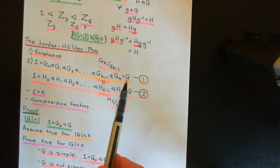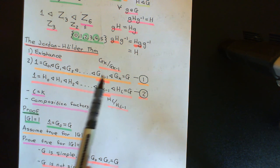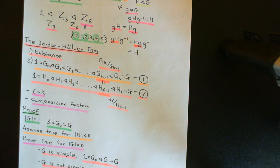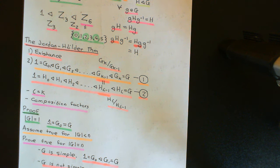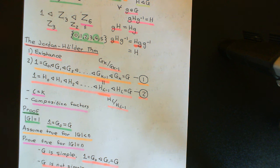So we have now proven that in case 1 — where the two maximal normal subgroups just to the left of the improper subgroup are the same — the two composition series for G have the same length and their composition factors correspond, i.e. part two of the Jordan-Hölder theorem holds. In the next video we'll go to case 2, where those maximal normal subgroups are different, and prove that harder case.